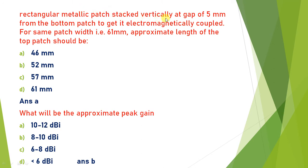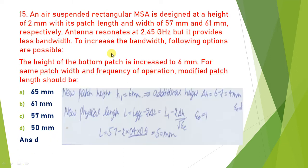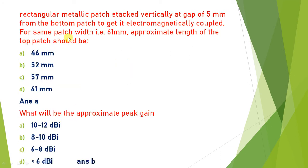A rectangular metallic patch is stacked vertically at a gap of 5 mm from the bottom patch for electromagnetic coupling, with the same patch width and 61 mm length. The new parasitic patch must have a length less than 51 mm. The value closest and less than 51 is 46 mm, so the answer is A.